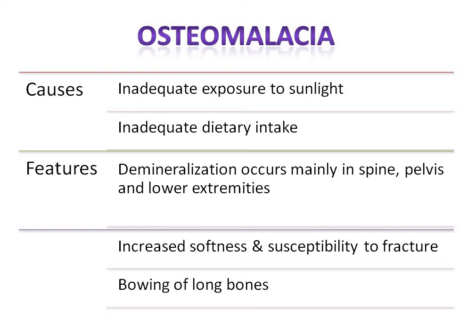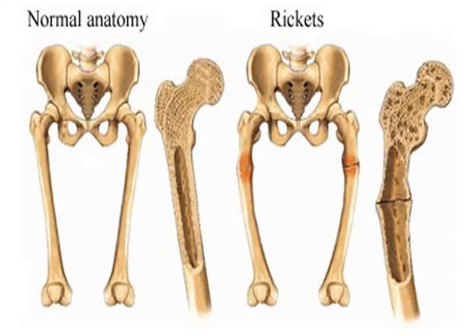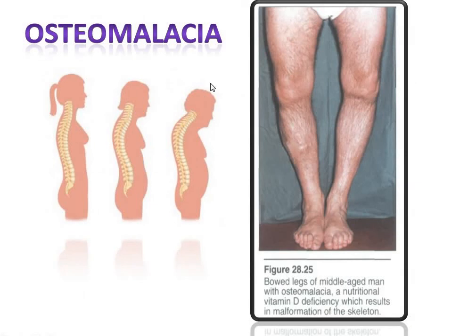Demineralization occurs mainly in the spine, pelvis, and lower extremities, softening the bones and making them more susceptible to fracture. It can also lead to bowing of the long bones. In the images, you can see normal bone anatomy compared to bowing of legs in rickets, bones prone to fractures, and in osteomalacia the curvature of the spine — termed kyphosis — as seen in a middle-aged man with nutritional vitamin D deficiency.